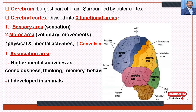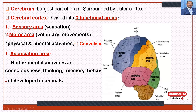Number one is the sensory area, which processes pain sensation. The motor area gives commands to the skeletal muscles and is required for increased physical and mental activities, including convulsions. The association area handles higher mental activities such as consciousness, thinking, memory, and behavior. All these are mediated by the association area.